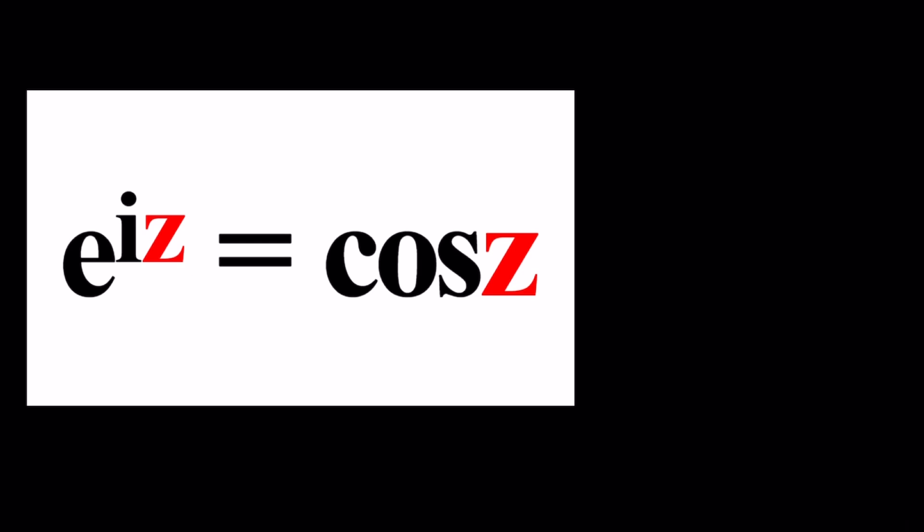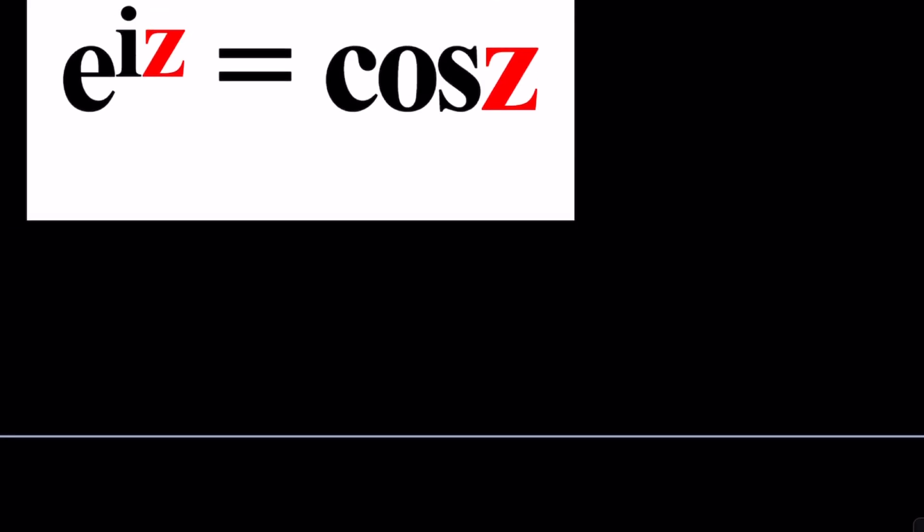This was the problem e to the iz equals cosine z, which is I think a really nice problem. We could call this a homemade problem because I kind of came up with the idea, but that's no big deal and this was part of the comment. So we have this equation e to the iz cosine z, and we're going to go ahead and explore.